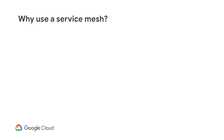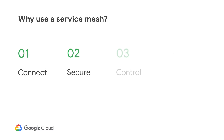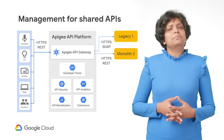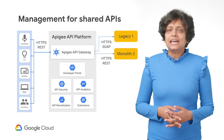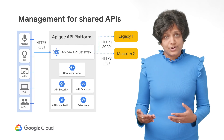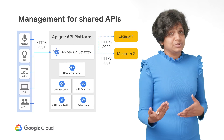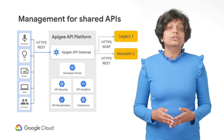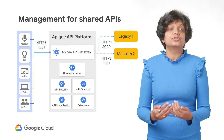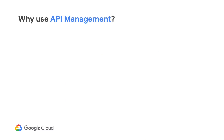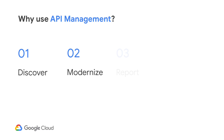Why use a service mesh? It's to connect, secure, control, and observe our microservices infrastructure. Now let's talk about the management of APIs. As we said, APIs represent the communication contract. And as we share APIs to clients outside the network, we want to manage requests that conform to those contracts. You would use API management to help developers discover the APIs, to modernize your old legacy APIs into a more modern REST-based format, and to properly report and monitor the usage of your APIs.